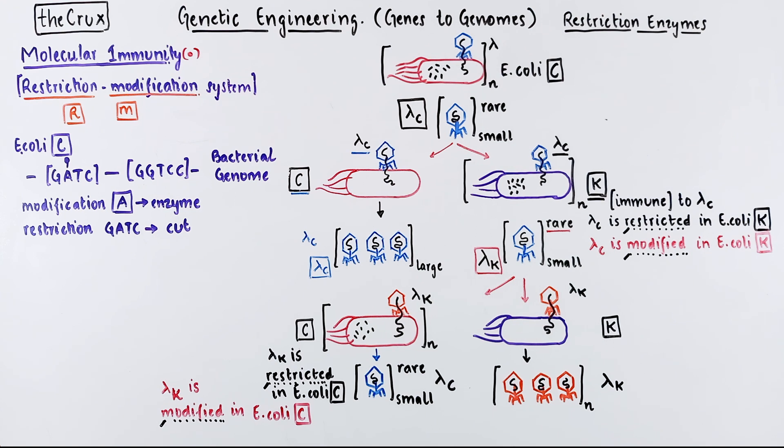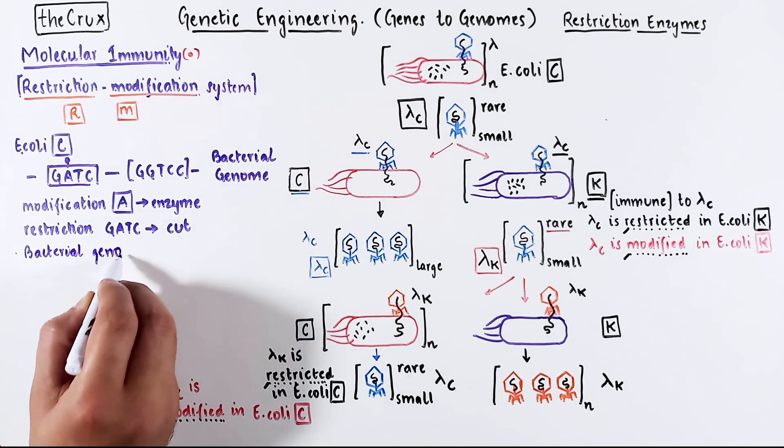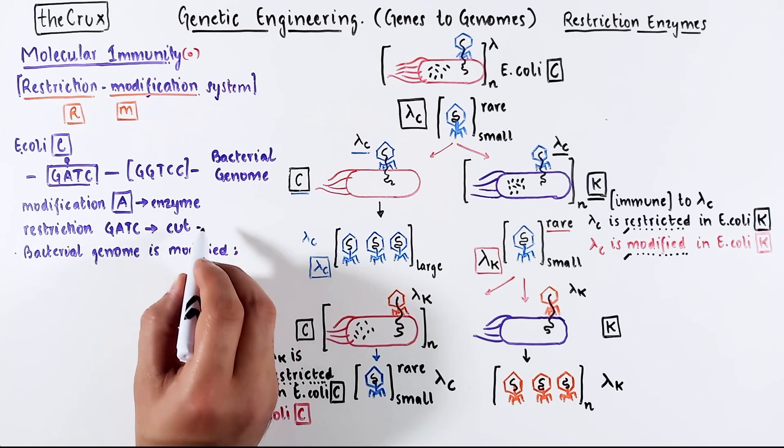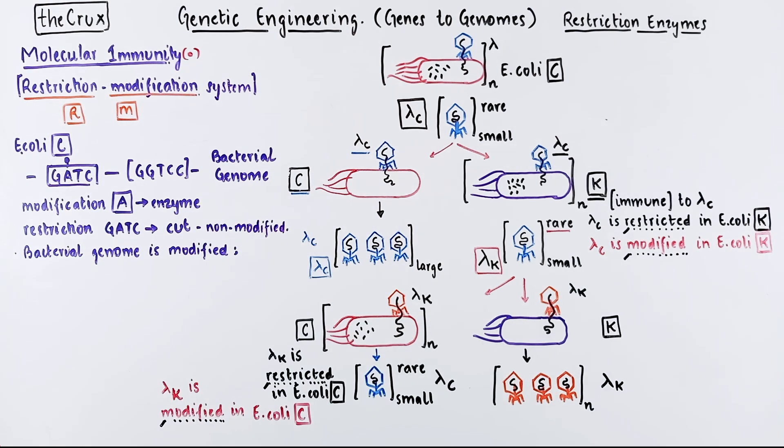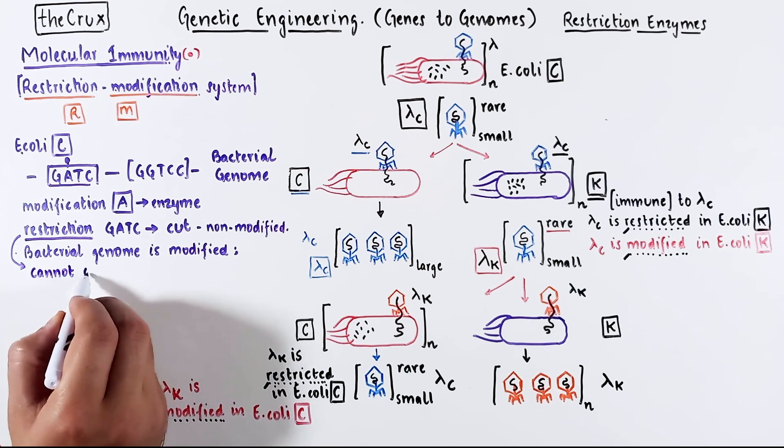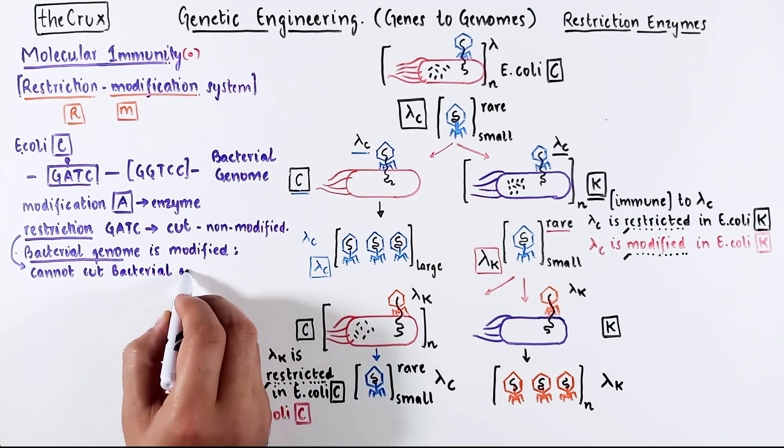I will make this clear once more because this is really important. The enzyme that recognizes GATC will only cut GATC if the GATC is non-modified. And as we noted, the bacterial genome in E. coli C has modified GATC. And with that reasoning, the bacterial restriction enzyme cannot cut its own DNA.